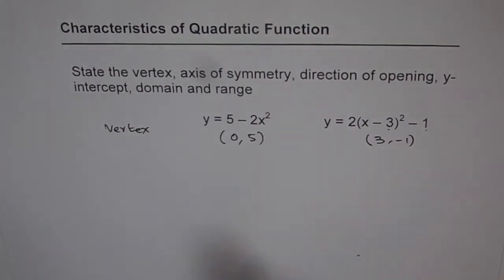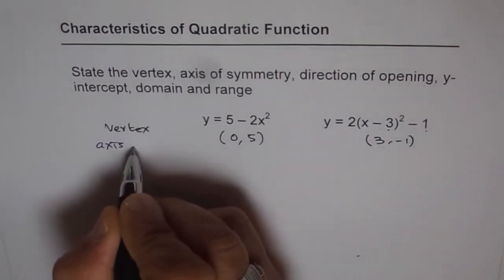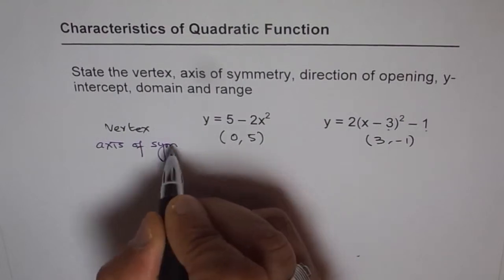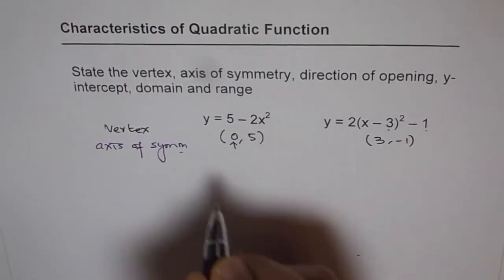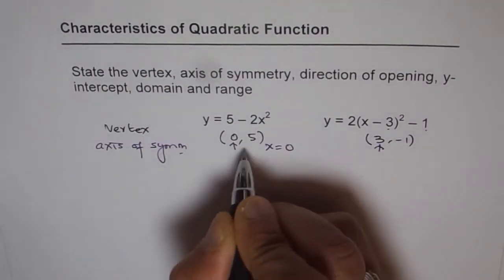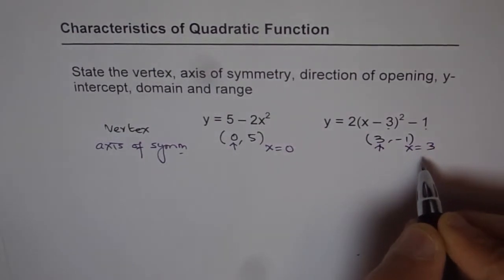And now let's find axis of symmetry. So axis of symmetry is actually through the vertex only, right? So axis of symmetry is at x equals to this value. x equals 0 in this case and x equals 3 in our second equation.